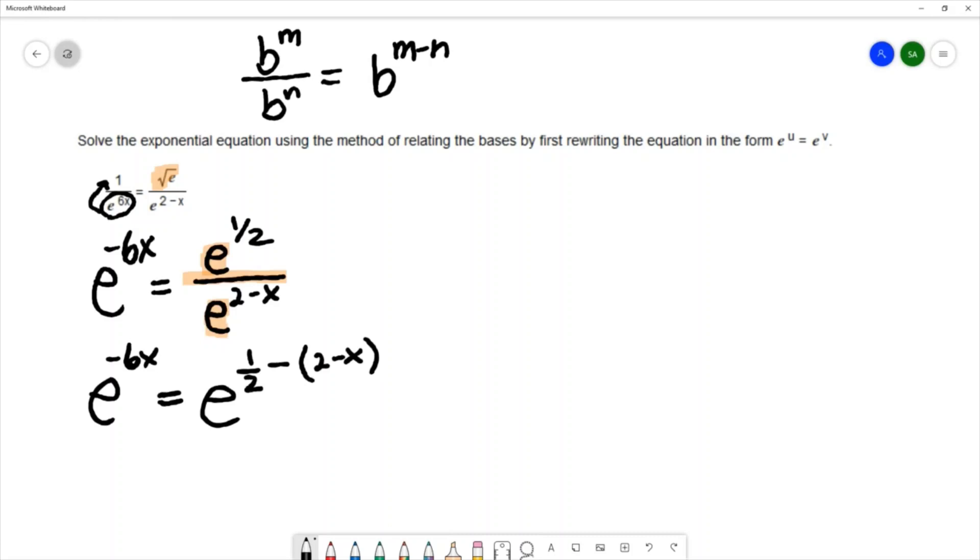So this would give e to the negative 6x equals e to the one half minus 2 plus x.